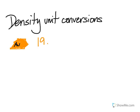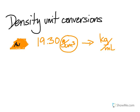Now let's say we want to convert these units. Instead of grams per cubic centimeter, we want to convert them into kilograms per milliliter. What would the answer be if we converted the units into kilograms per milliliter?